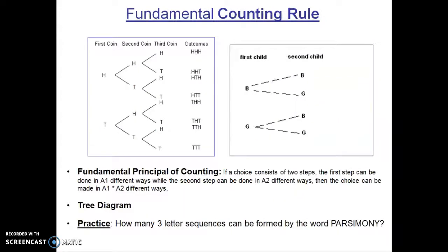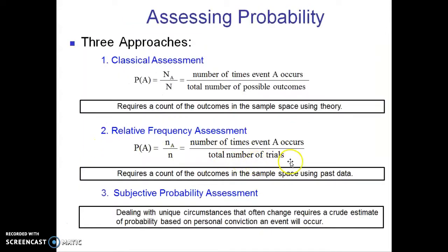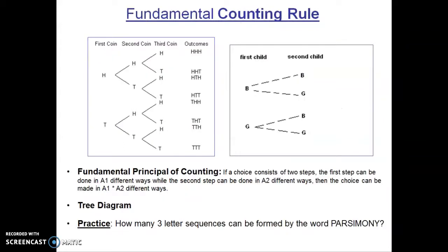Now let's move on and talk about the fundamental principle of counting. We're starting a section now that is going to help us establish the denominators in our probability analysis. That is, the number of possible outcomes or the number of trials. And to do that, we need to know how to count the total outcomes that might occur. The fundamental principle of counting says that if a choice consists of two steps, the first step can be done in A1 different ways, while the second step can be done in A2 different ways, then the choice can be made in A1 times A2 different ways.